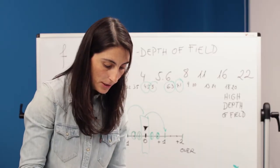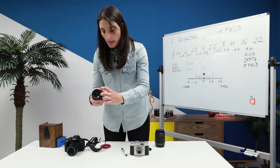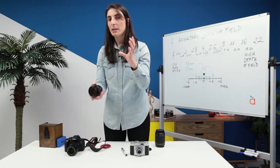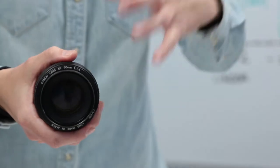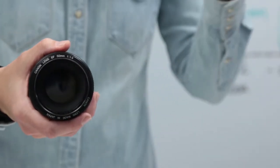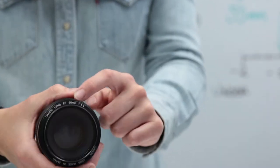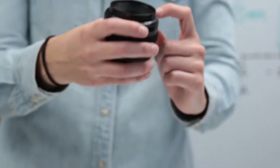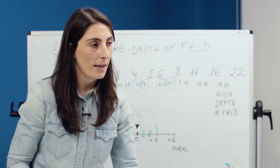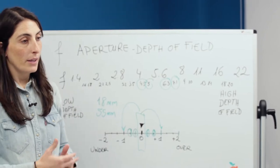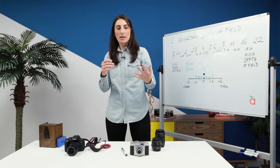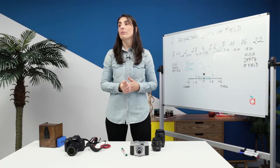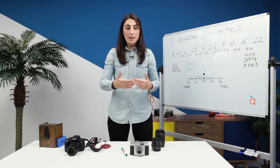Let's take this other lens of 50mm, which only has one focal distance. Next to it we see 1:1.4. This lens allows us to use a higher opening, and as a consequence we also get more options for blurry effects. We can also appreciate that it doesn't have a movable focal distance, nor a range of aperture.